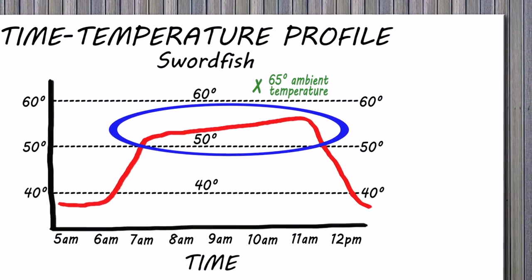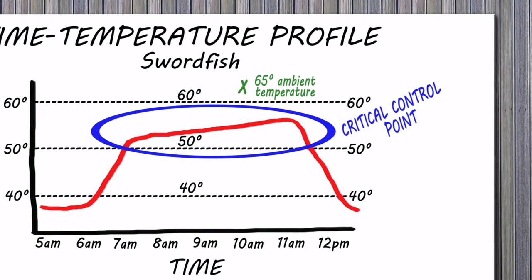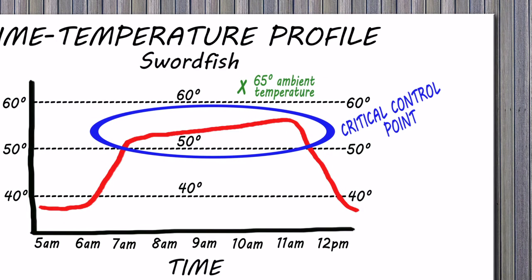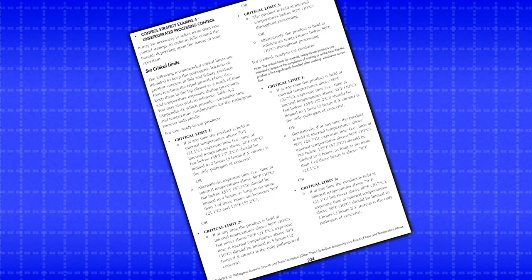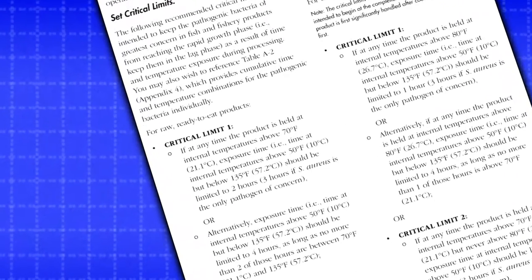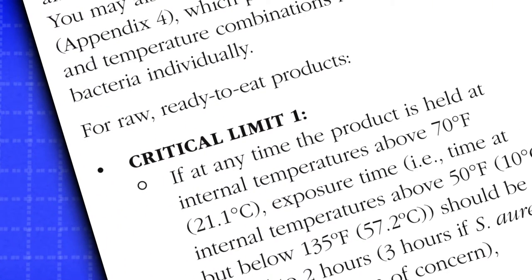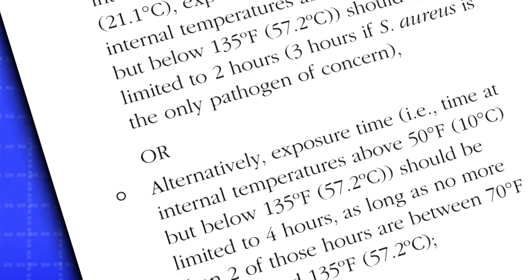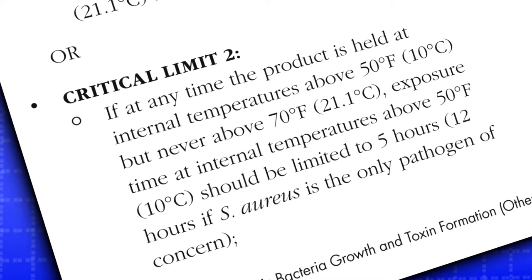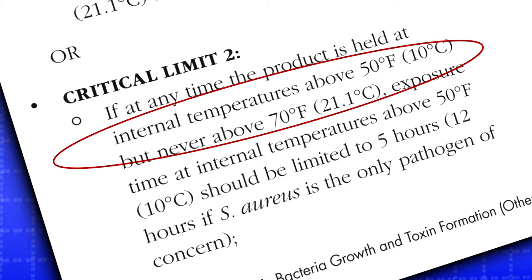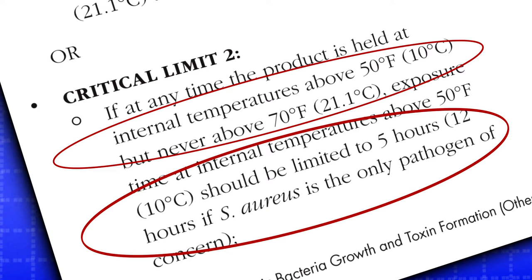Based on this information, this processor has established that unrefrigerated processing should be one of the critical control points. The processor looks up the critical limit options for raw ready-to-eat products and chooses critical limit option 2 because the product is exposed to temperatures above 50 degrees but below 70 degrees Fahrenheit. This critical limit option allows 5 hours for processing, or 12 hours if Staphylococcus aureus is the only pathogen of concern.